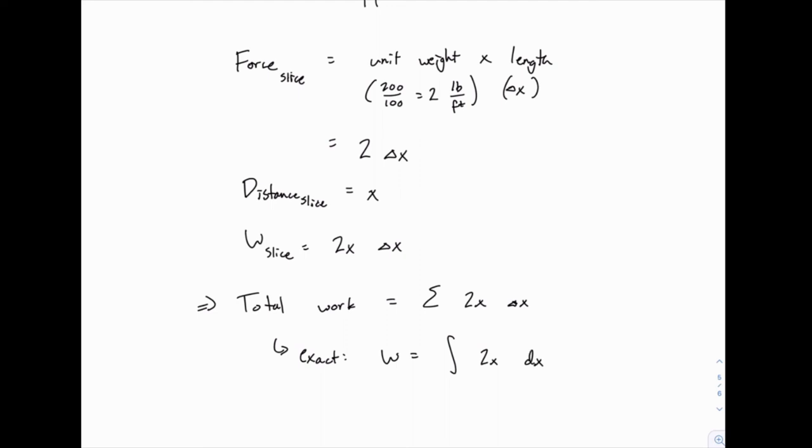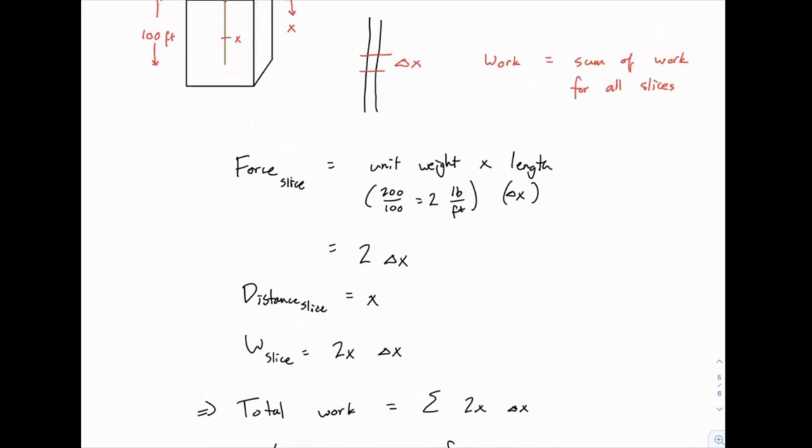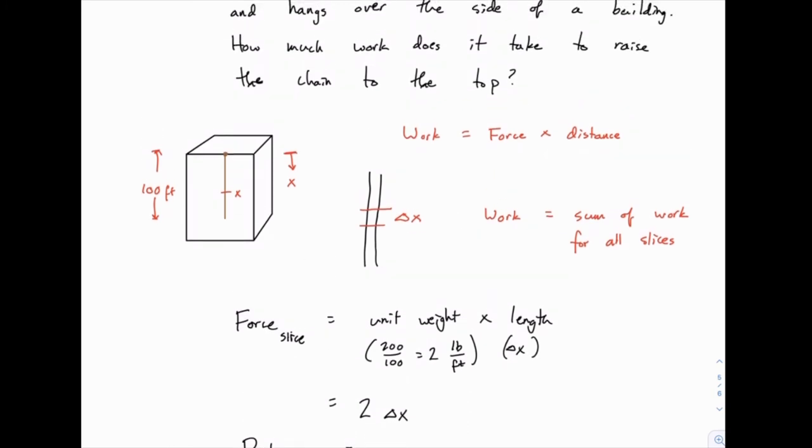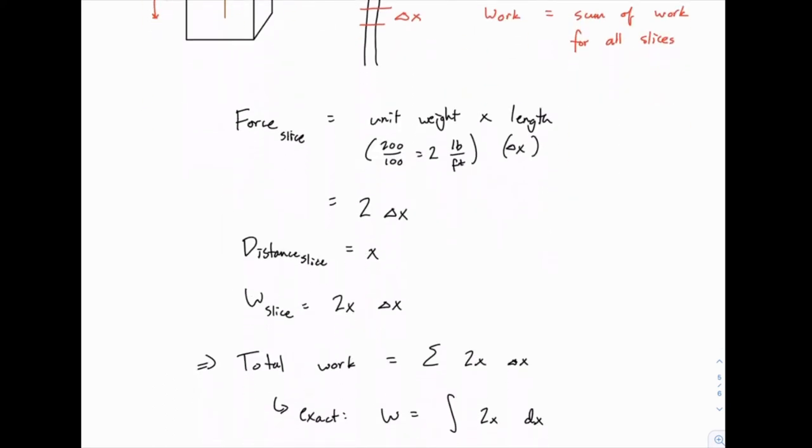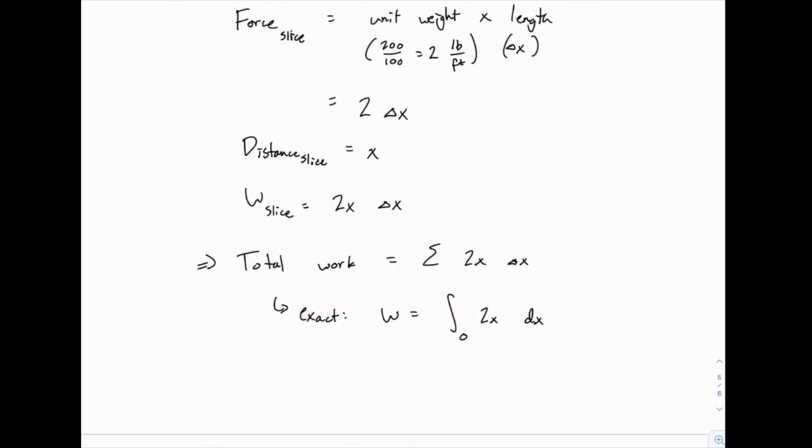And all we need is limits of integration in order to finish the problem. If we go back to the picture and think about the limits of integration, what are the values of x at the beginning and at the end, or at the top and the bottom of the chain? If we're covering the full distance of the chain, we're lifting all of it, we would need to move all the way from x equals zero at the top to x equals 100 at the bottom. So that would be zero to 100.